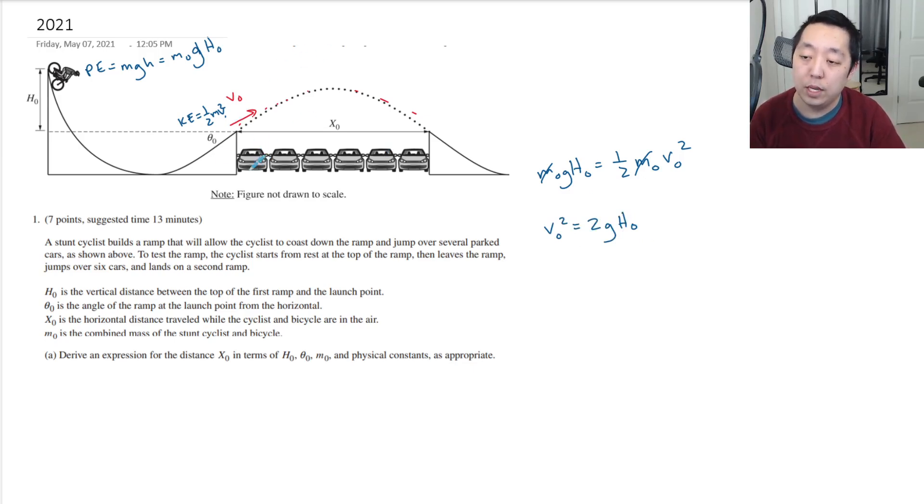So now we're on the kinematics portion. How do we figure out the range or how far we traveled? There are some equations that you can memorize, but I prefer not to memorize those things. So let's break down the initial velocity into the x components and the y components. This would be V0 cosine theta 0, and this would be V0 sine theta 0.